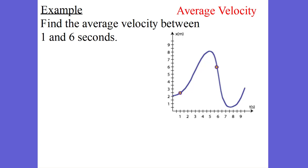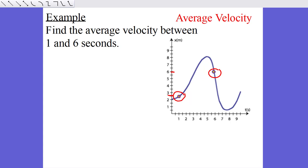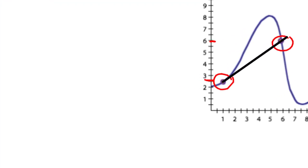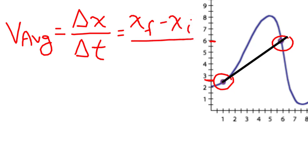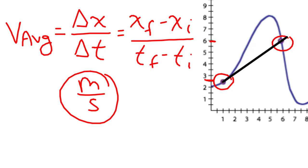Let's take a look at an example. Here we're looking at average velocity between one second and six seconds. At one second, the object is at a position of about 2.5 meters. At six seconds, it's at a position of about six meters. The average velocity — the change of its position divided by its change in time — is computed as: position final (about six meters) minus position initial (about 2.5 meters), divided by time final (six seconds) minus time initial (one second). The result will be in meters per second.